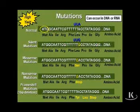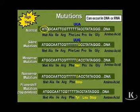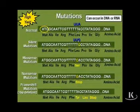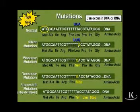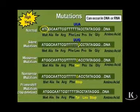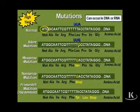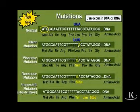Remember that the third base is the one that got mutated here. When the third base gets mutated, that's the most likely time you're going to get a silent mutation, because that third base provides less specificity for the protein that's encoded.